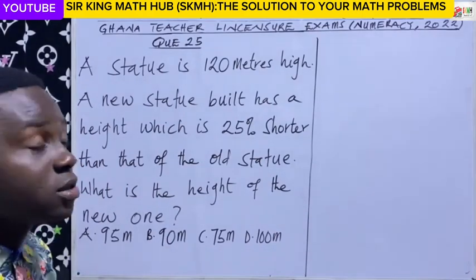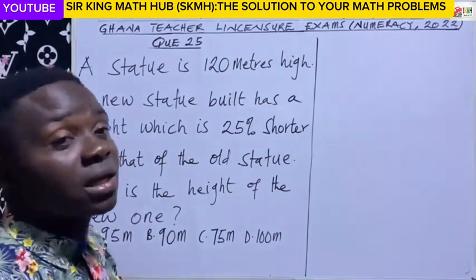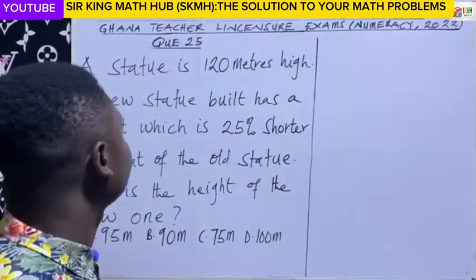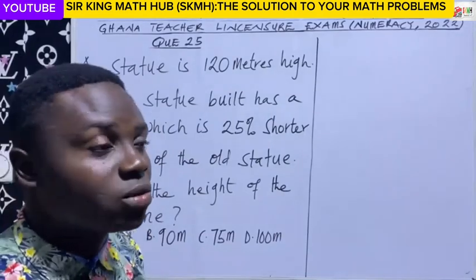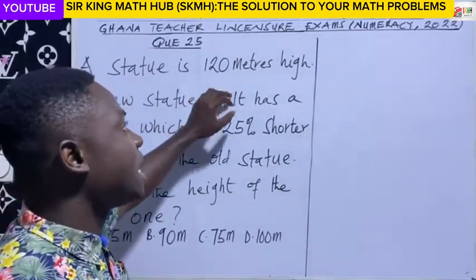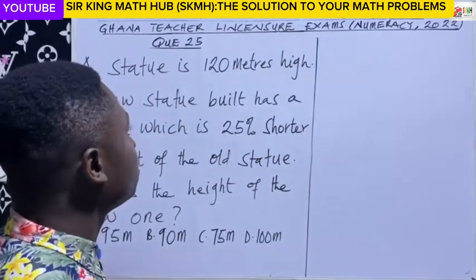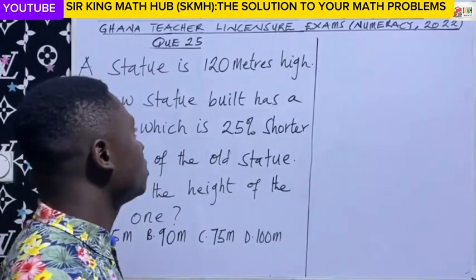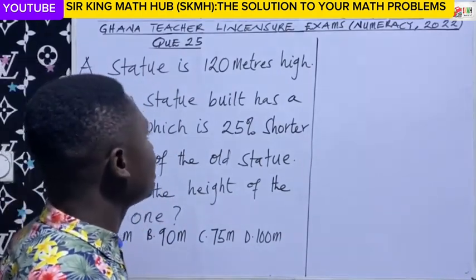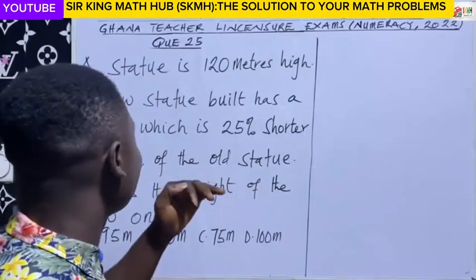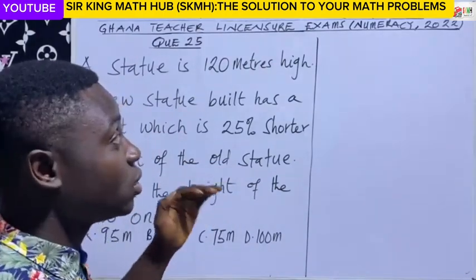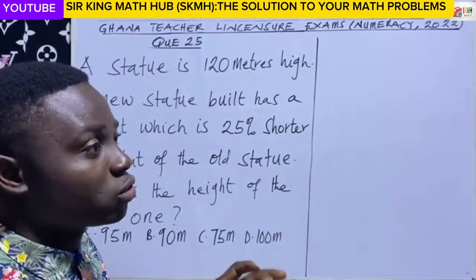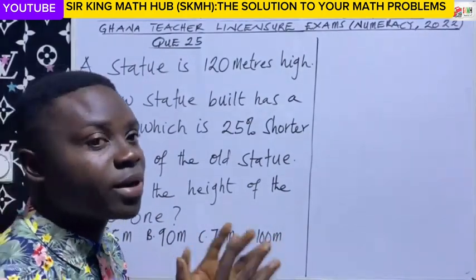So let's analyze the question. We have a statue and the height of this statue is 120 meters. Now a new statue has been built — this is the old one, with a height of 120 meters. The new statue has a height which is 25% shorter than the old one, meaning the old one is taller. The new one is 25% shorter in terms of height when compared to the old statue.